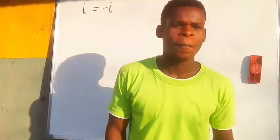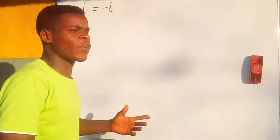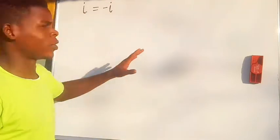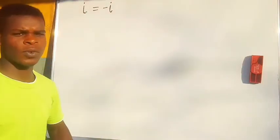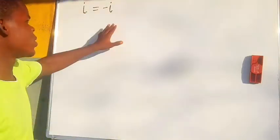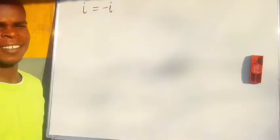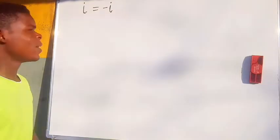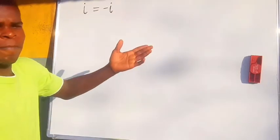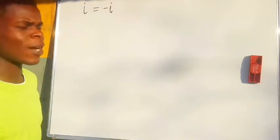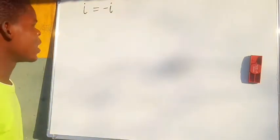Welcome to this video. In this video we'll be proving what we have on the board. We have i is equal to negative of i. Say that this and this are the same. How is that possible?